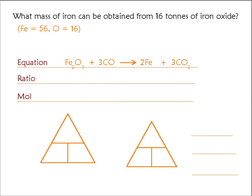Let's go through the question. We've been given the equation here. The iron oxide is in a 1 to 2 ratio for the iron. So we need to work out the amount of mole of the iron oxide, then double it to get the amount of iron.